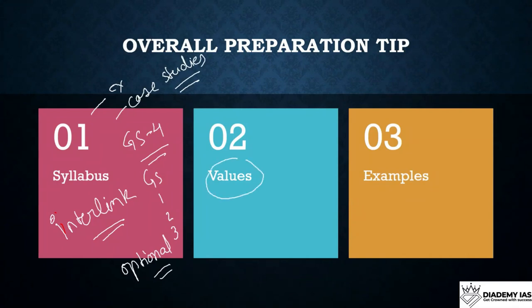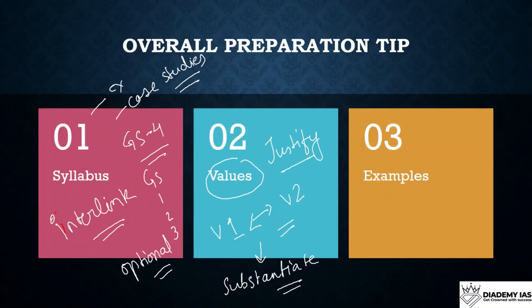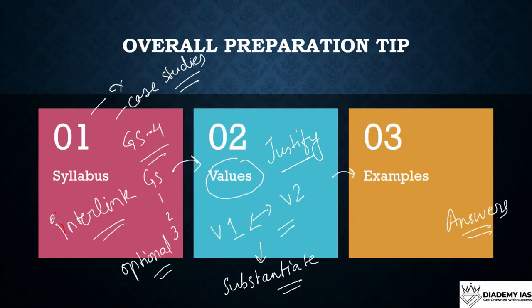Then you have to remember the values. Values basically tell your preference — what you like and what you don't like. You have to remember the values and their connections — how value 1 is linked with value 2. The benefit is you can substantiate and justify your answer. Once you read the syllabus properly, you remember the values mentioned there, and then use them with examples in your answers.